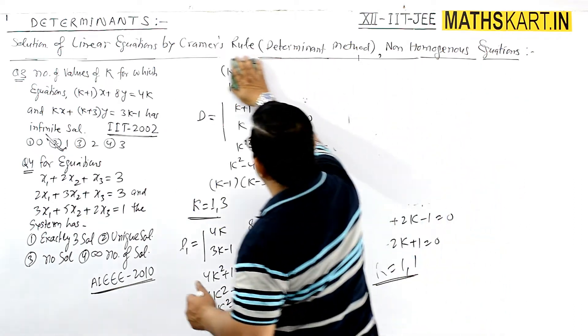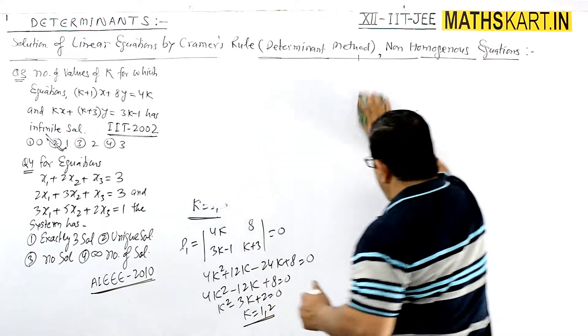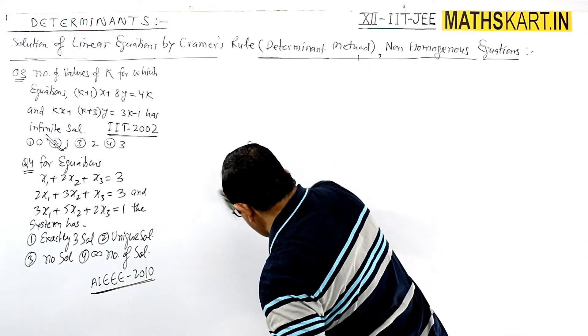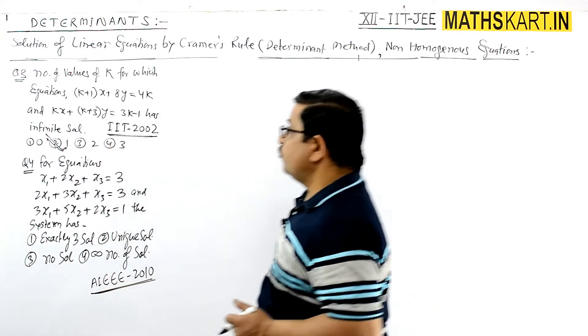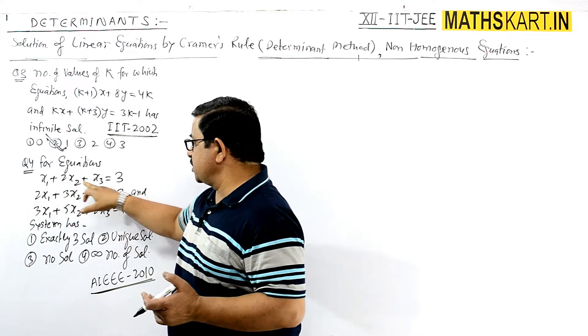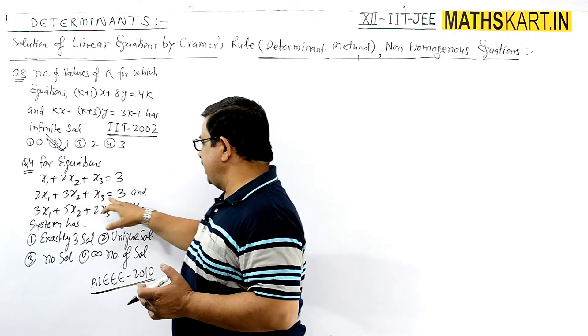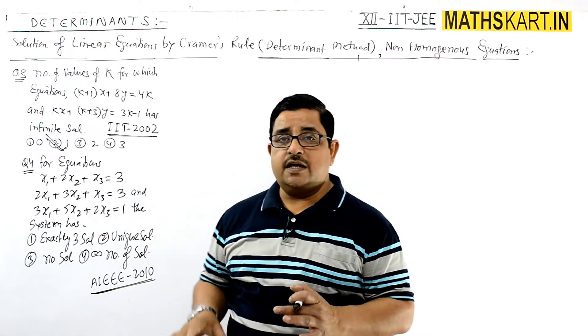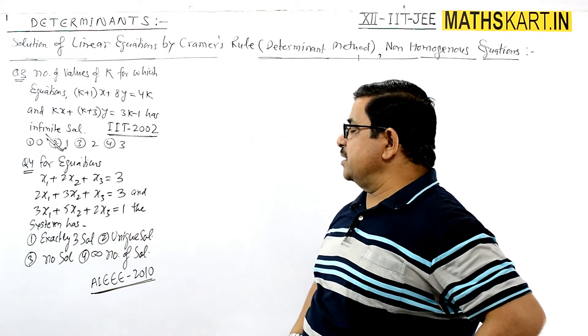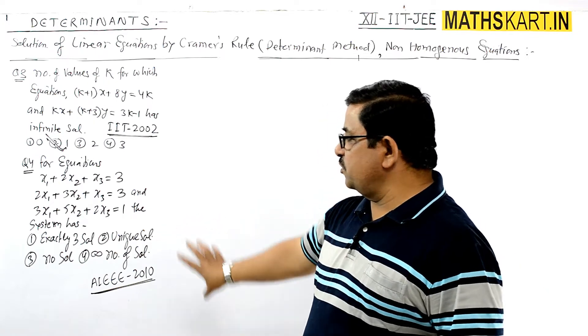Question four: For the system of equations x₁ + 2x₂ + x₃ = 3, and two more equations, we need to check whether the system has exactly three solutions, a unique solution, no solution,